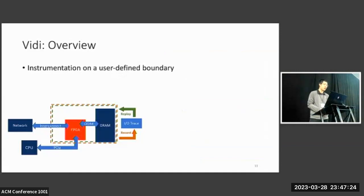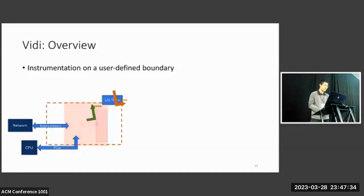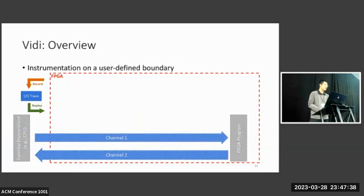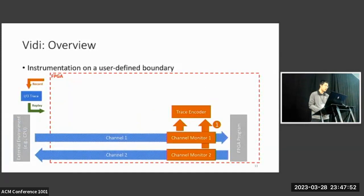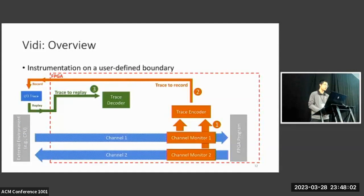So as an overview, Vidi works as an instrumentation on a user-defined boundary, and as we have seen earlier, the most common boundary is selected to be the entire FPGA device. And then let us take a look at what's inside the FPGA. For simplicity, CPU and the network are abstracted as an external environment, which is communicating with the FPGA program. Vidi will instrument channel monitors on each communication channel, which traces transactions and forwards them to Trace Encoder. Trace Encoder manages the transaction ordering and generates a trace that can be stored somewhere else. During replay, Trace Decoder will reconstruct transaction orderings and distribute traces to channel replayers where transactions are created and given to the FPGA application.